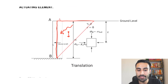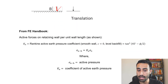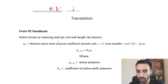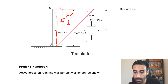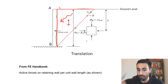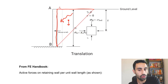In the handbook, we use the active Rankine coefficient Ka. We simply plug in the friction angle phi into the formula to find Ka — note that the active formula uses a minus sign. We multiply Ka by the original vertical pressure to get the horizontal lateral pressure for the active case.